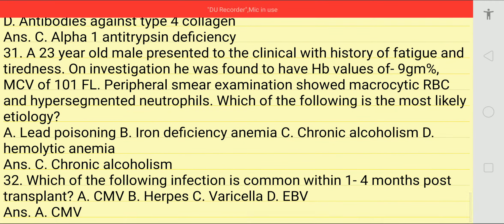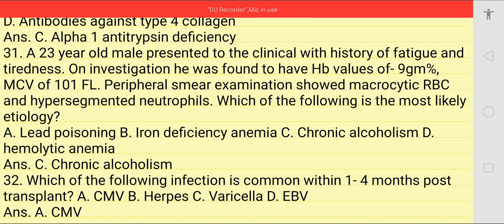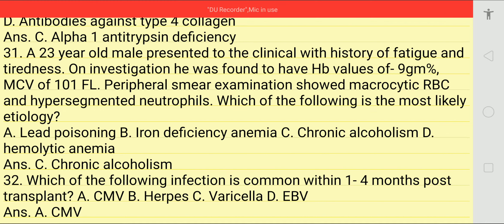A 23-year-old male presented to clinic with history of fatigue and tiredness. On examination hemoglobin was 9 g%, MCV 101 fL. Peripheral smear showed macrocytic RBCs and hypersegmented neutrophils. Which of the following is the most likely etiology? Options: lead poisoning, iron deficiency anemia, chronic alcoholism, hemolytic anemia. Answer is C — chronic alcoholism.